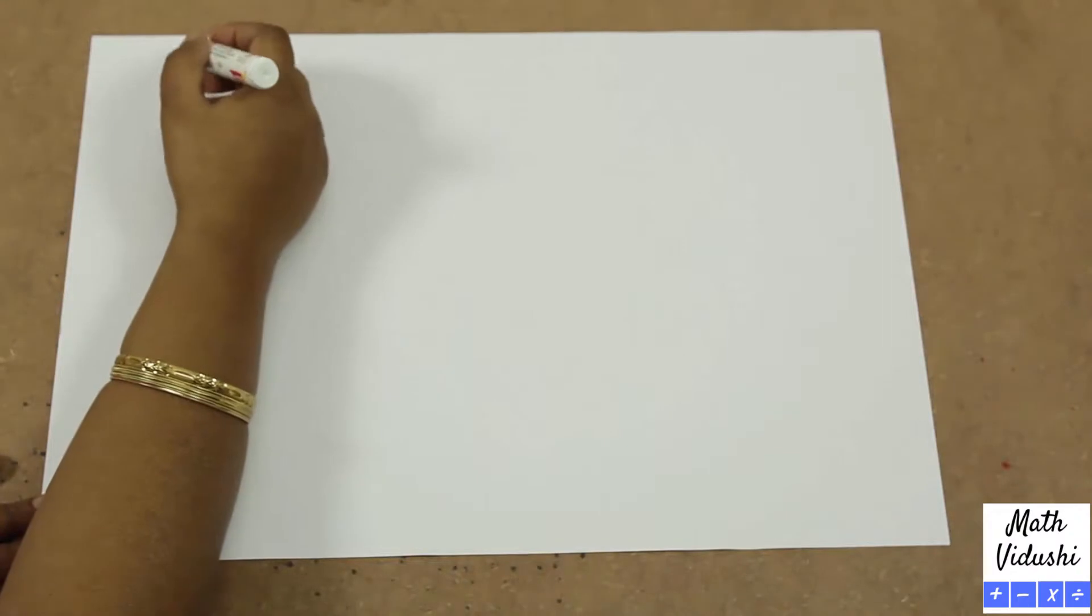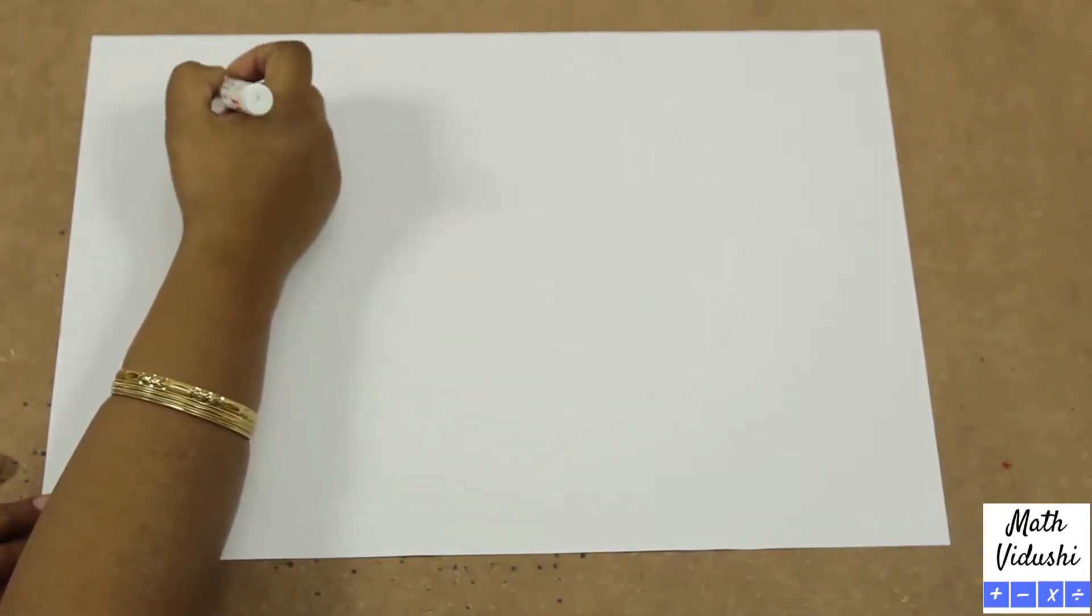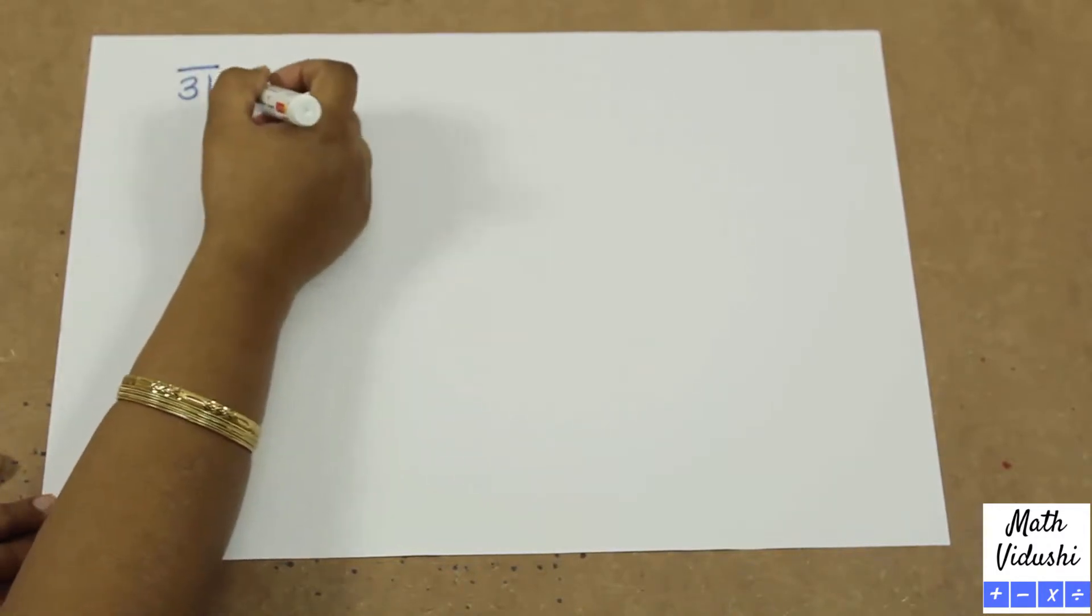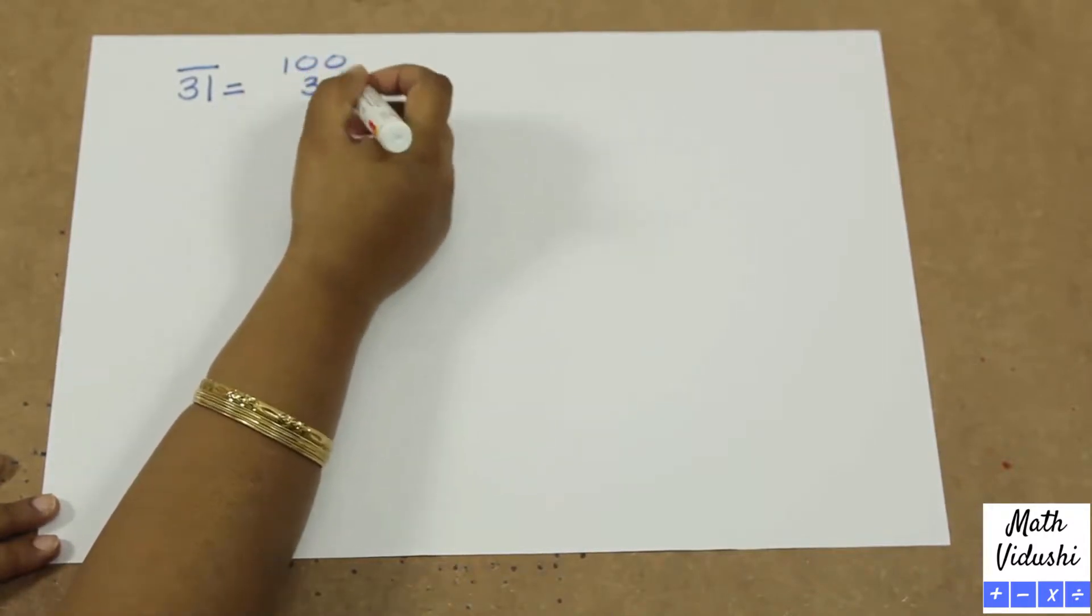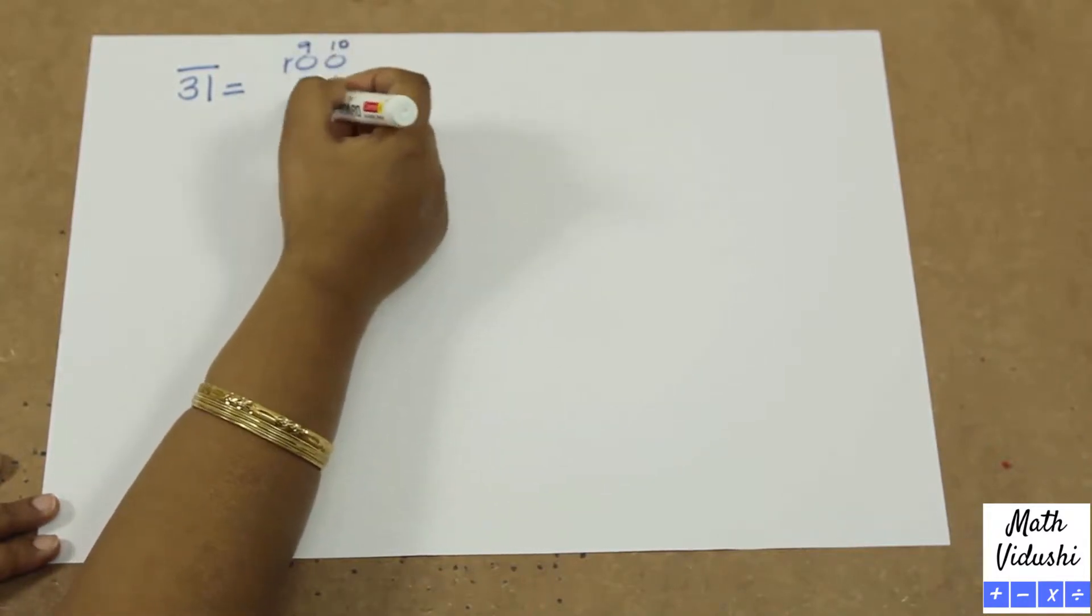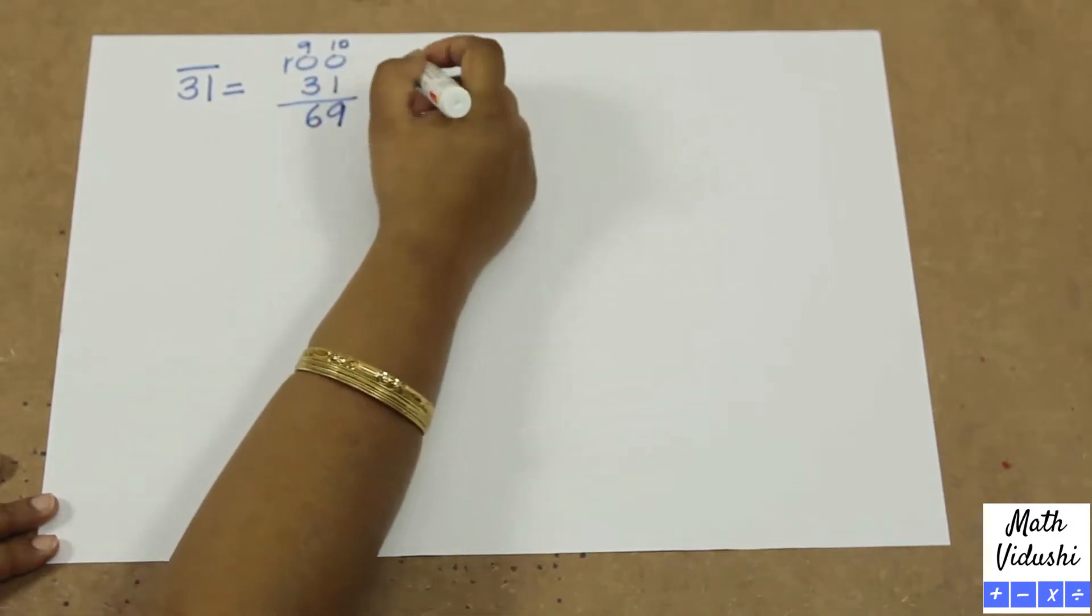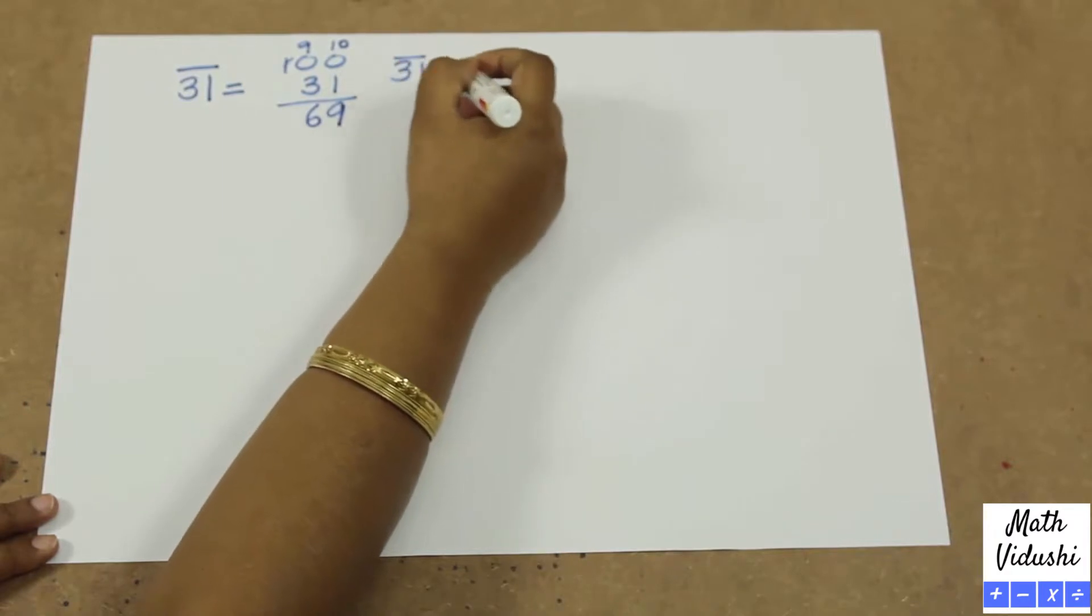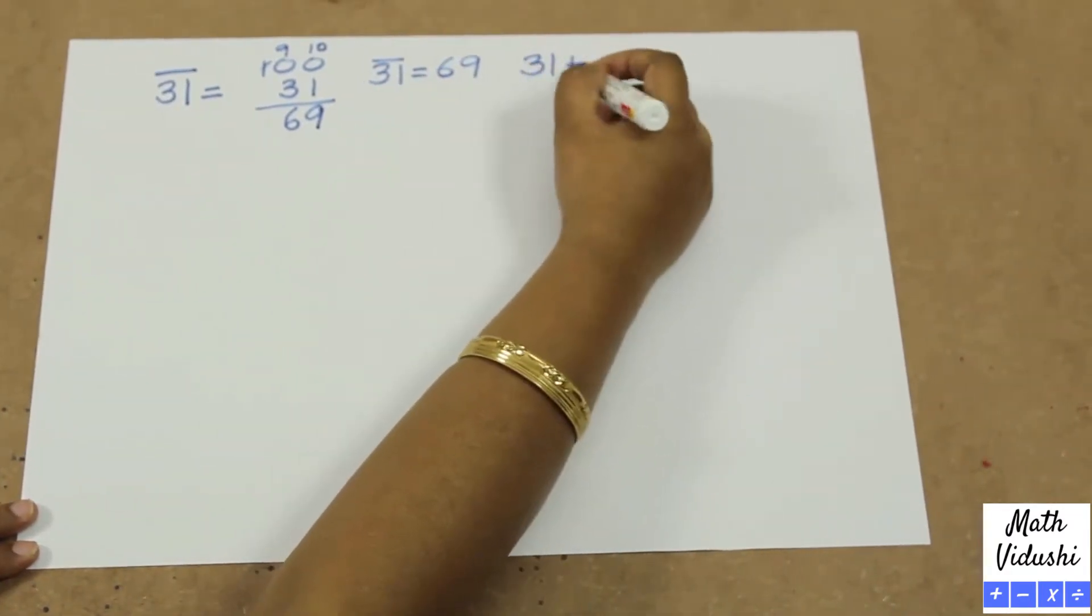If you want to find out the complement or Nikhilam of 31, write it as 31 bar. You will minus 31 from 100 which is all from 9 and last from 10. You will get 69. So you will write it as 31 bar equal to 69. Or you can further write it as 31 plus 69 gives you the base 100.